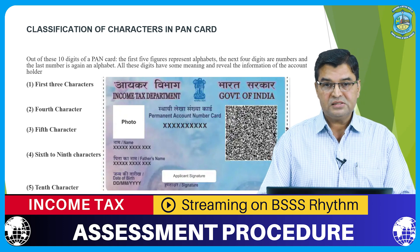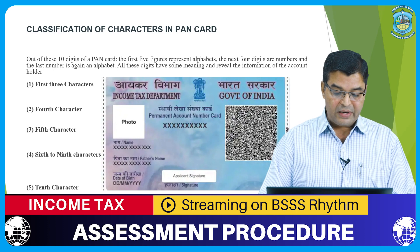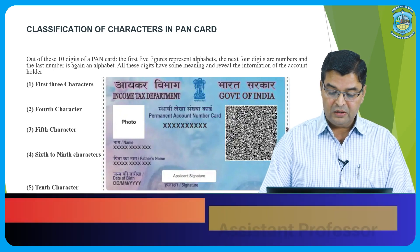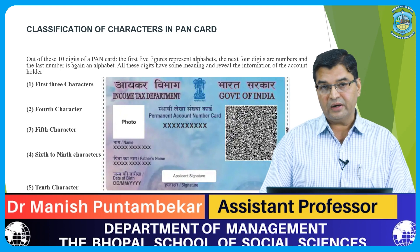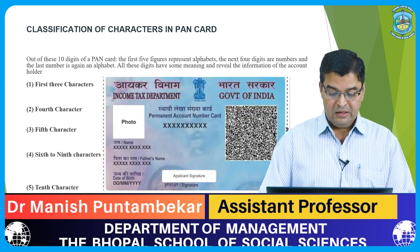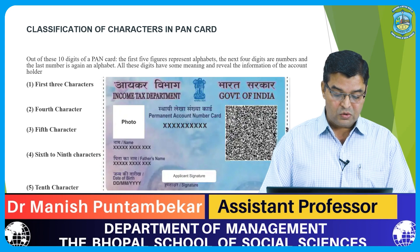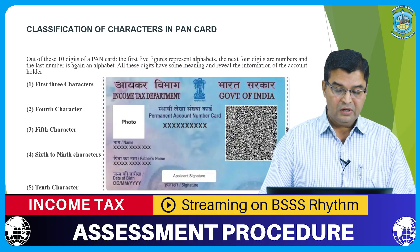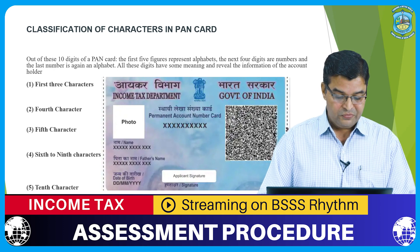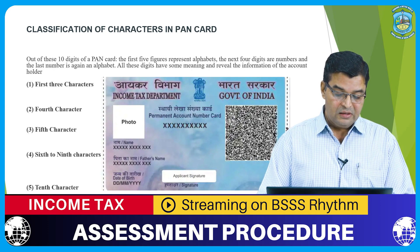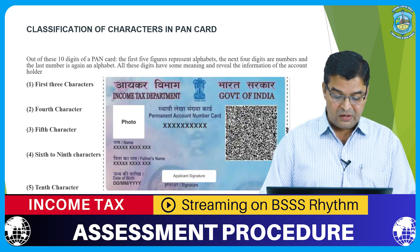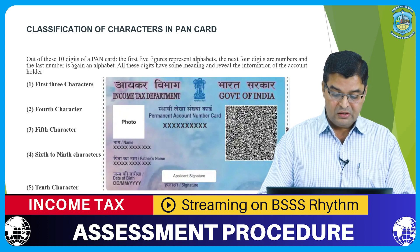Fourth: the sixth to ninth characters. These four characters are sequential numbers starting from 0001 to 9999. Like the first three characters, the selection here is also random. Fifth: the tenth character. The last or tenth character in the PAN card is an alphabetic check digit, which can be any alphabet.